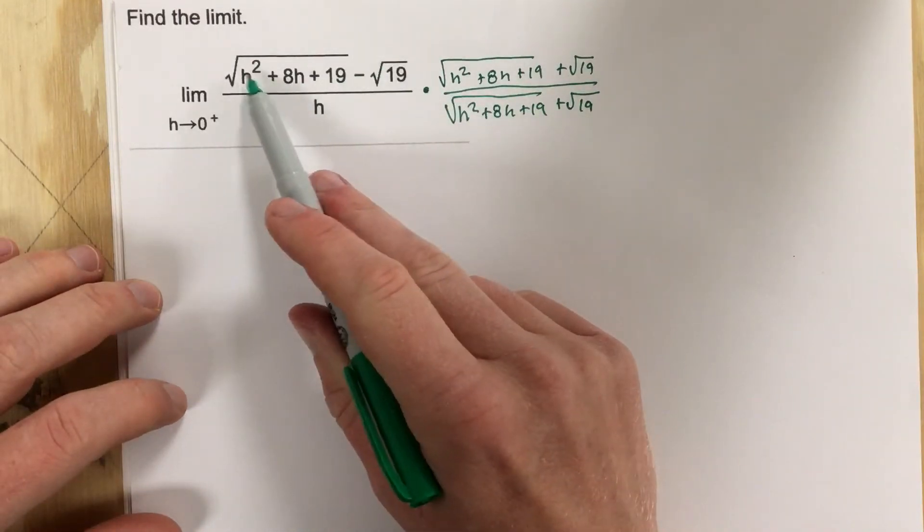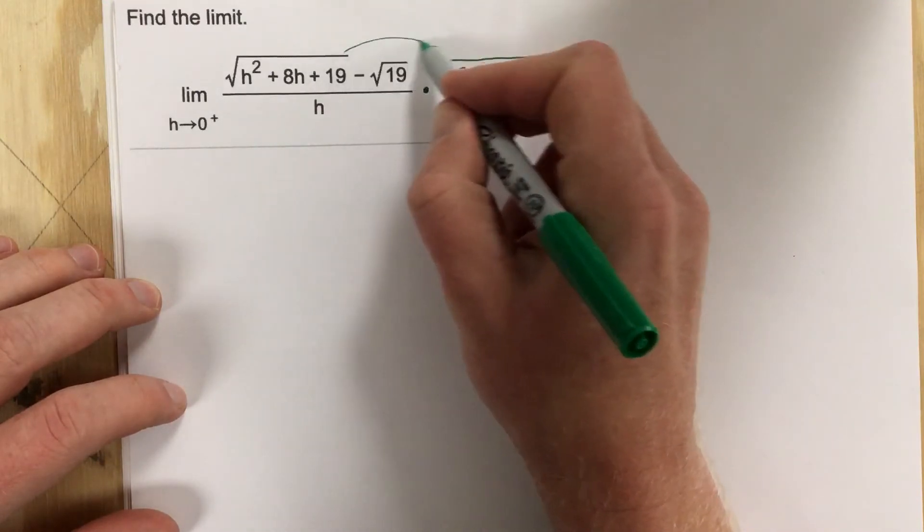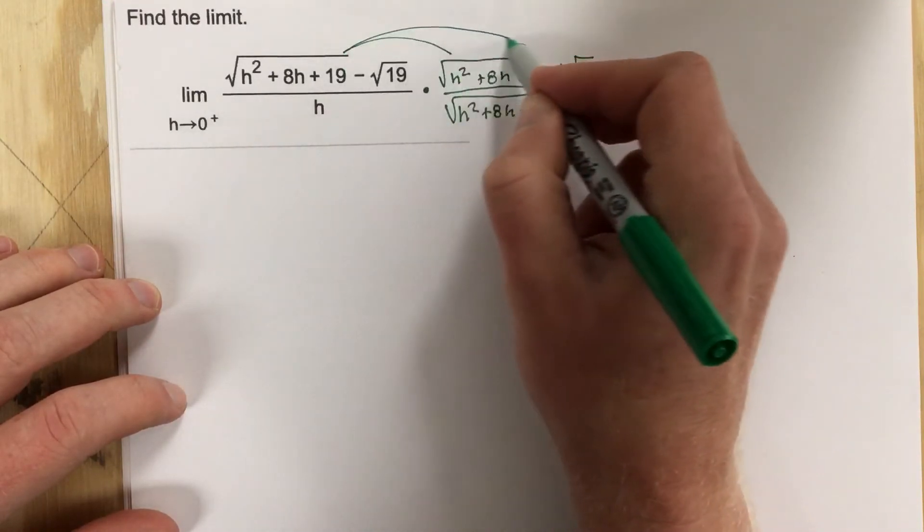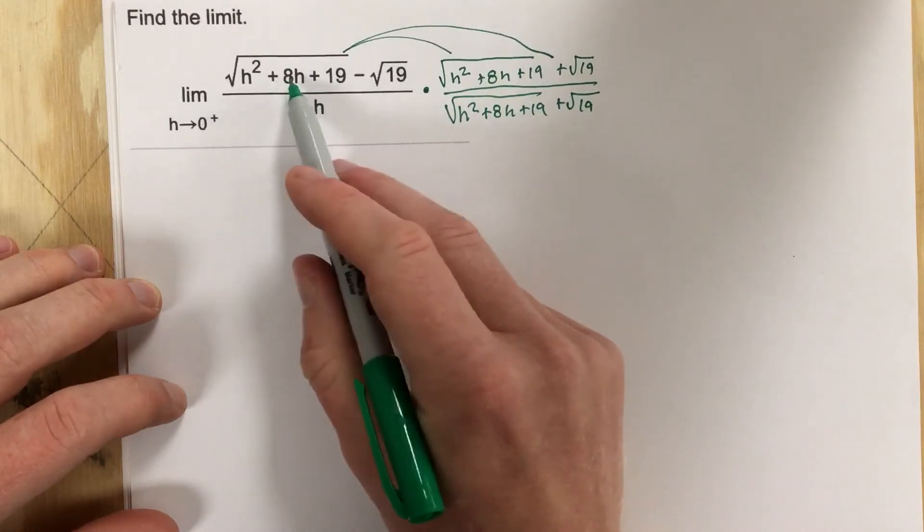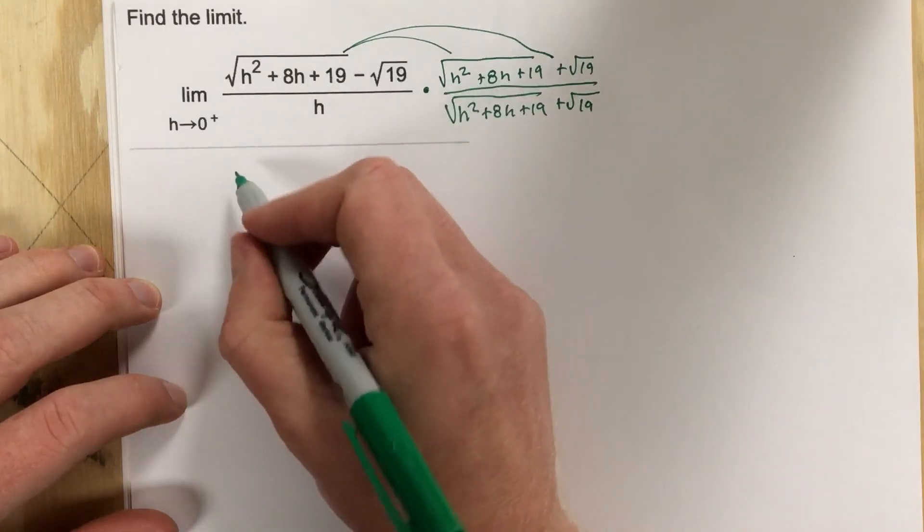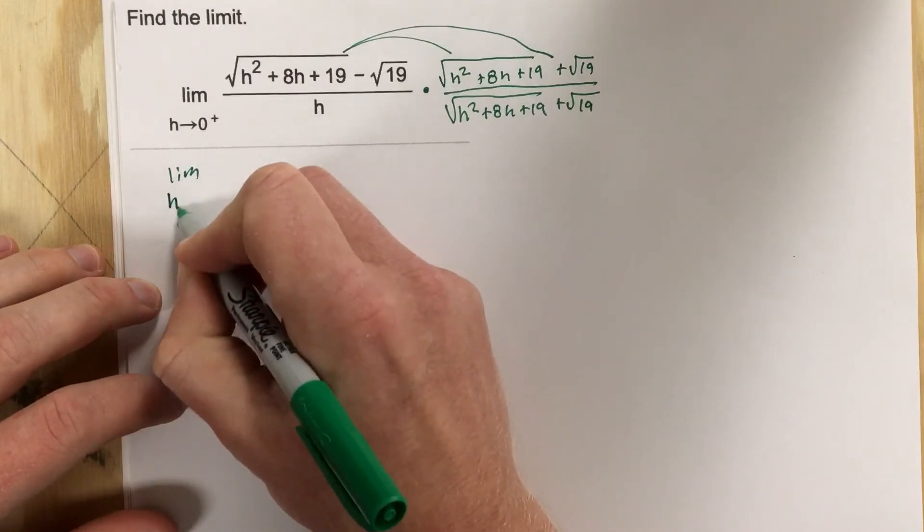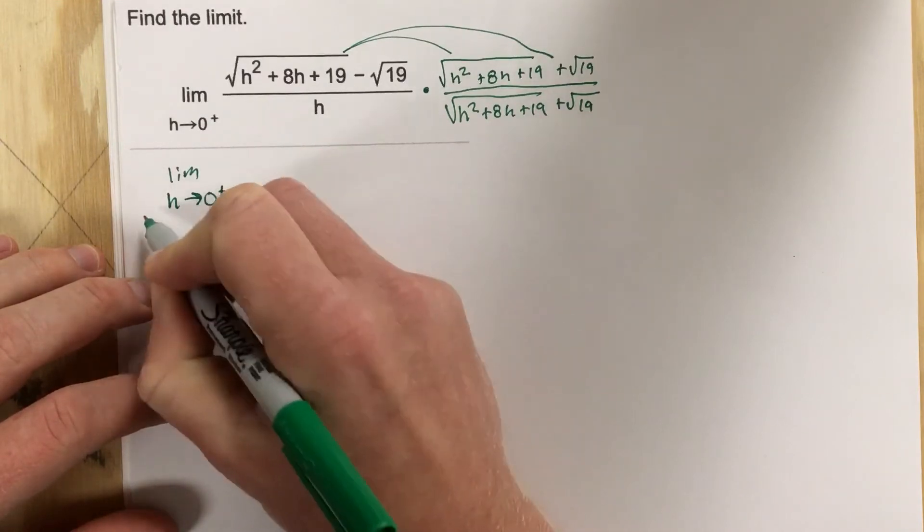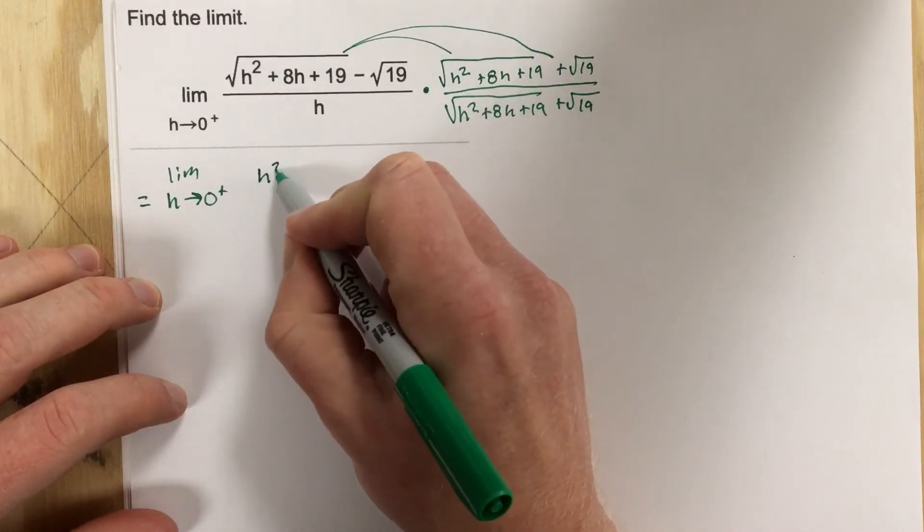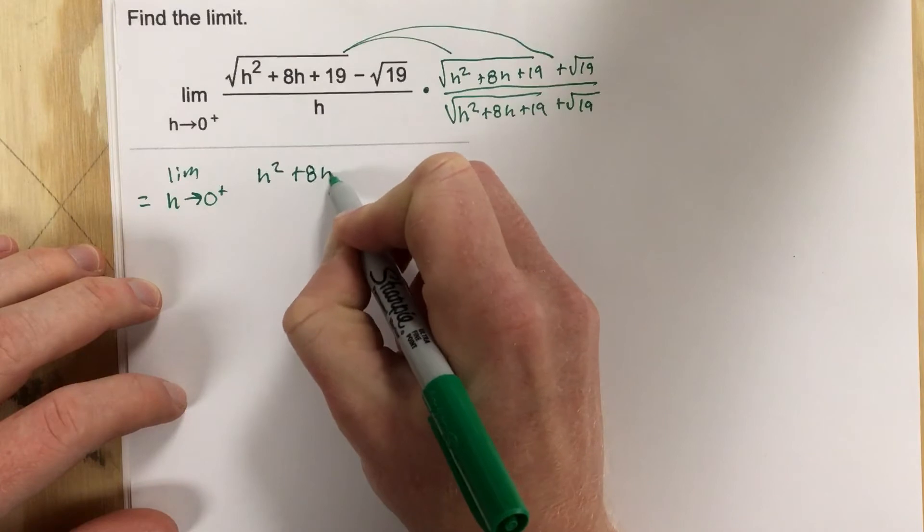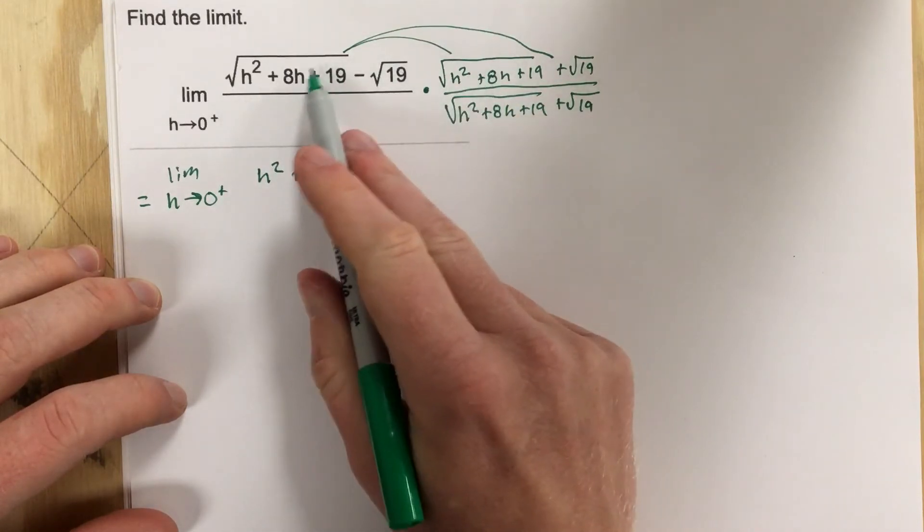So when I multiply the top I take this term times each of these terms. So this term times this one and this term times this one. And when I multiply this radical times this radical I end up with limit as h approaches zero from the right and I'll end up with h squared plus 8h plus 19.